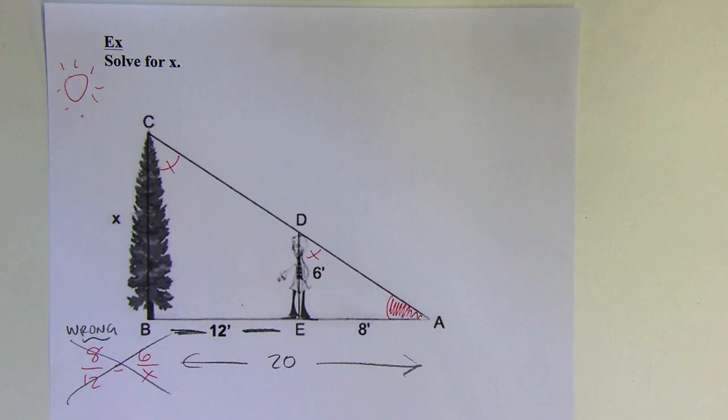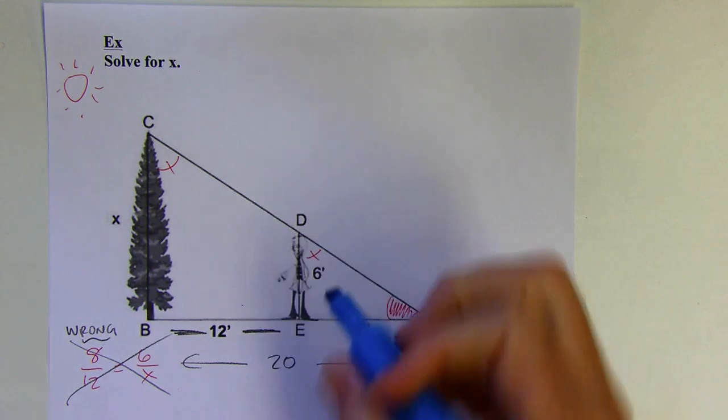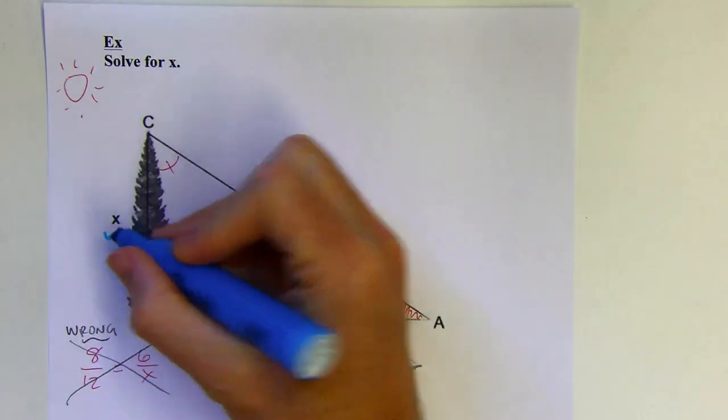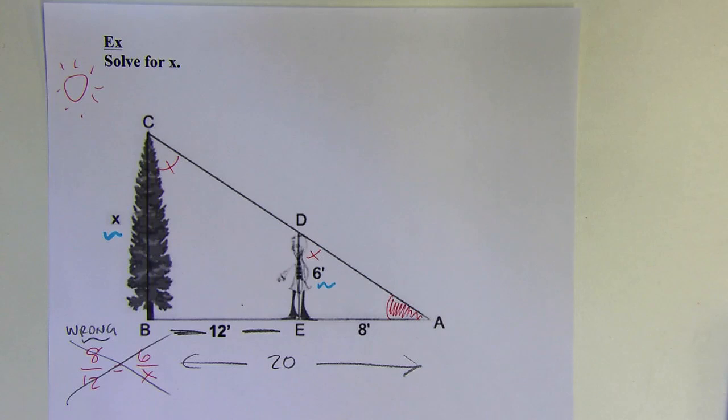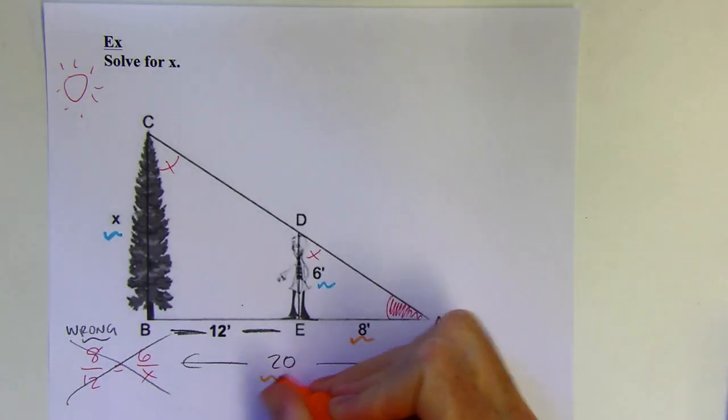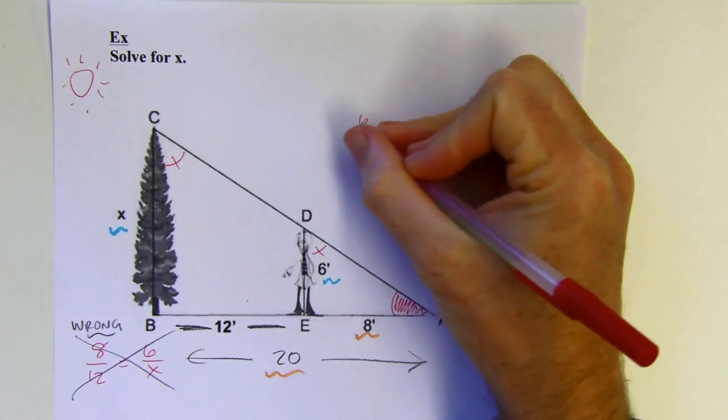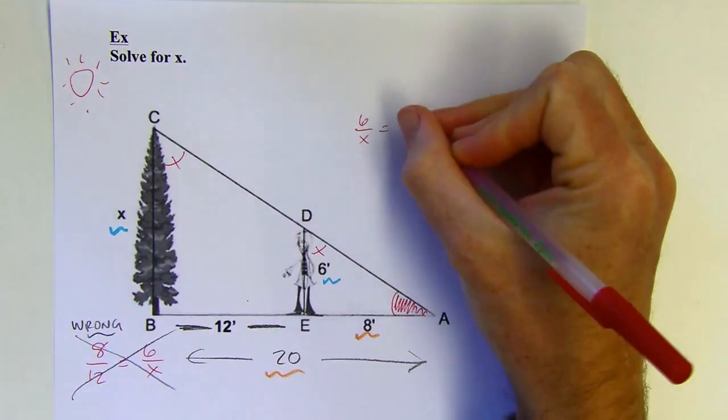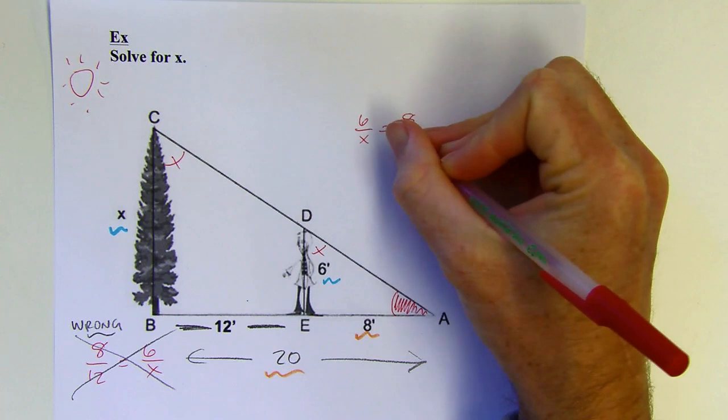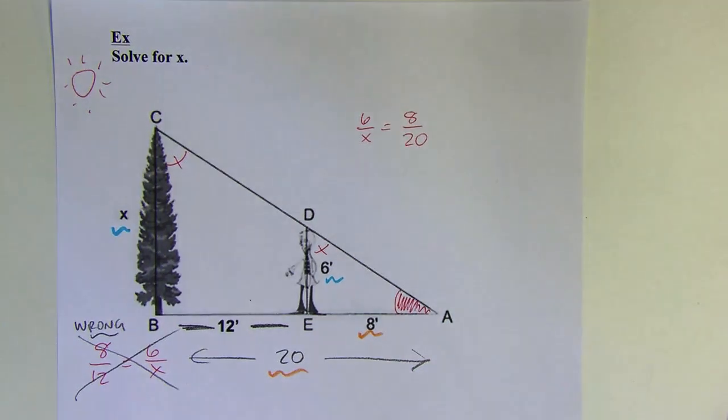When I set up my proportion I want to say 6 is to x as 8 is to 20, not as 8 is to 12. So let's go ahead and do that: 6 is to x as 8 is to 20, not to 12.